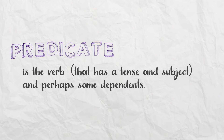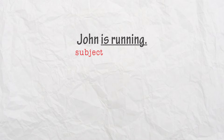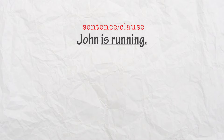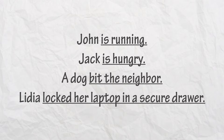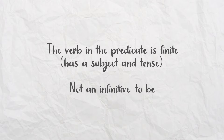Let me give you some examples. 'John is running' — the subject is John and the predicate is 'is running.' So this is a clause, this is a sentence. Another example: 'Lydia locked the laptop in a secure drawer' — 'locked the laptop in a secure drawer' is the predicate, and Lydia is the subject. It's important to know that the verb in a predicate is finite.